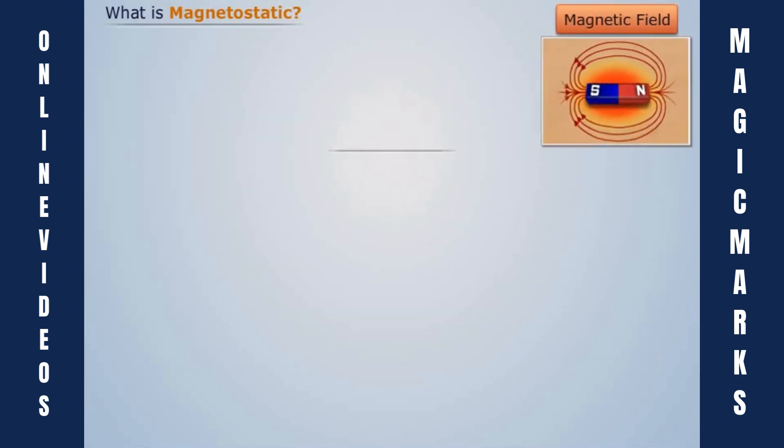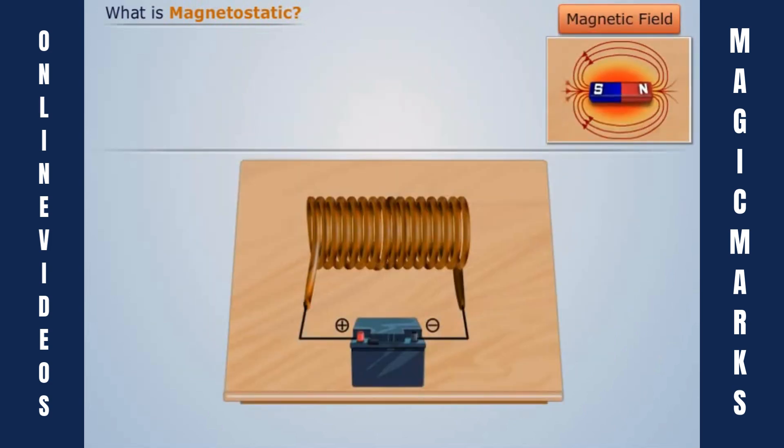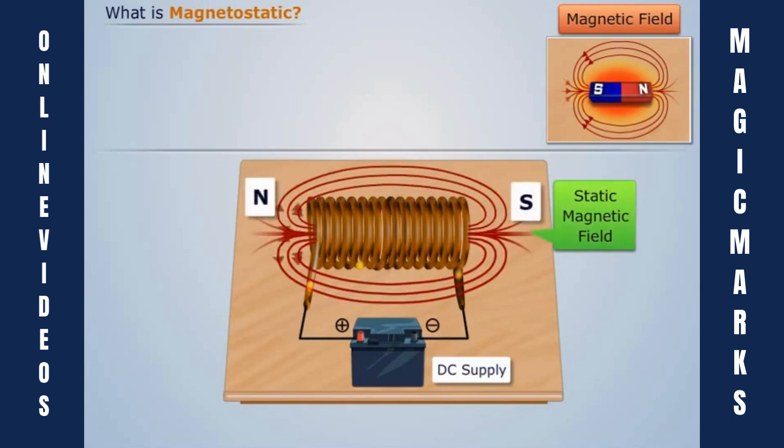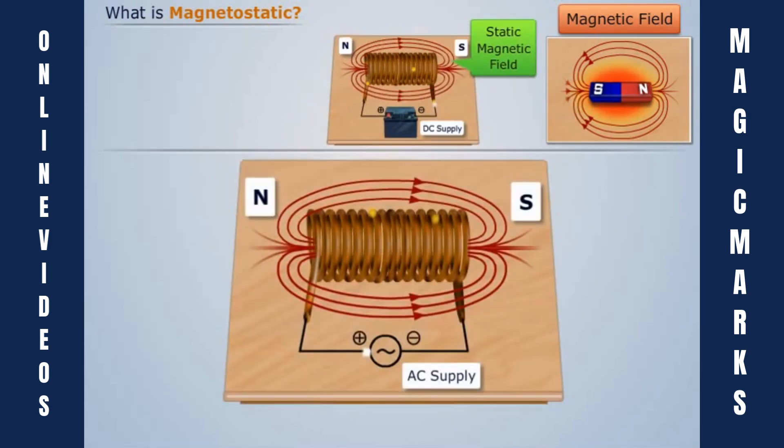Now consider a copper coil connected to a DC supply. When a current is made to flow through the coil, then static magnetic field is produced around the copper wire that does not vary with time.